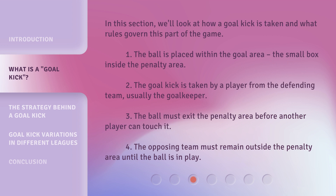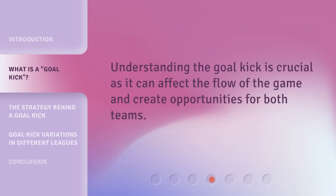In this section, we'll look at how a goal kick is taken and what rules govern this part of the game. 1. The ball is placed within the goal area, the small box inside the penalty area. 2. The goal kick is taken by a player from the defending team, usually the goalkeeper. 3. The ball must exit the penalty area before another player can touch it. 4. The opposing team must remain outside the penalty area until the ball is in play. 5. Understanding the goal kick is crucial as it can affect the flow of the game and create opportunities for both teams.